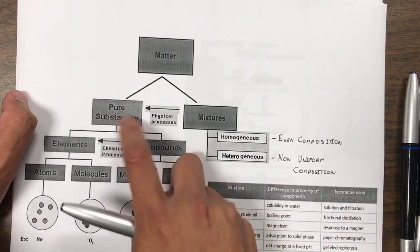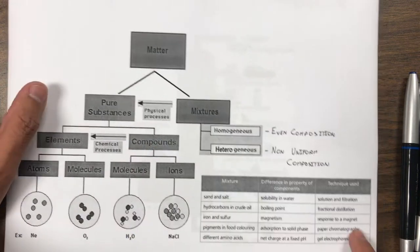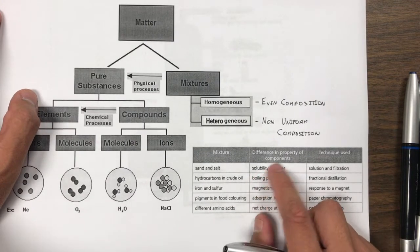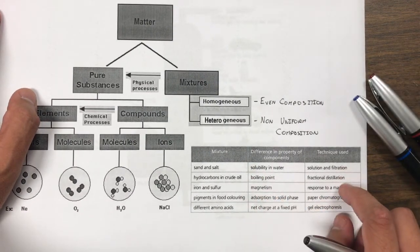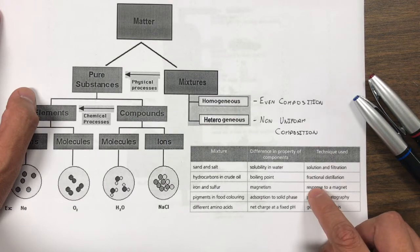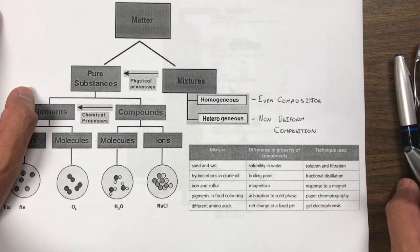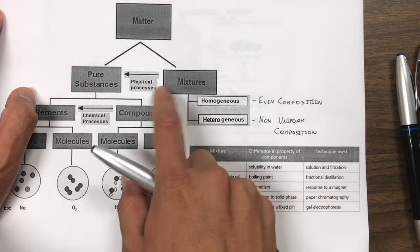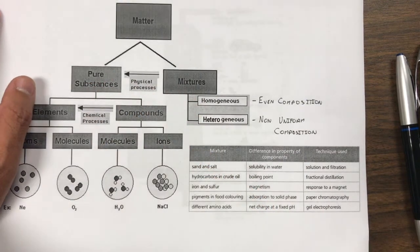We can make mixtures into pure substances through several physical processes, and here are some of them. We can filter, we can use distillation, we can use magnetism, paper chromatography, or gel electrophoresis to separate these mixtures into the pure substances.